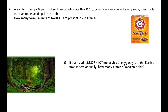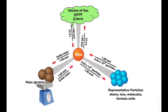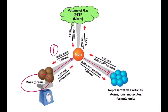Number four: a solution using 2.8 grams of sodium bicarbonate NaHCO₃ — commonly known as baking soda — was made to clean up an acid spill in the lab. How many formula units of NaHCO₃ are present in 2.8 grams? In this problem we're given a mass of 2.8 grams. We'll convert grams to moles for our first step, then moles to formula units as the second step.